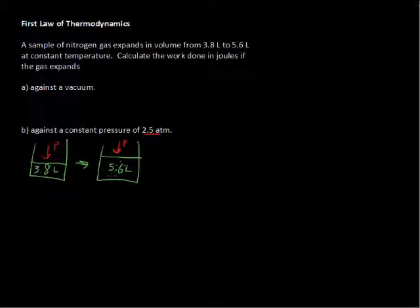So what is being done here? Well, work is being done by the system on the surroundings. So the formula for that is work equals negative pressure times the change in volume. This is oftentimes called PV work, and the delta, this little triangle here, means change in. So this is the change in volume.